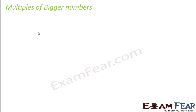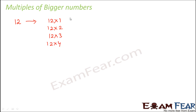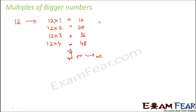You can also write multiples of bigger numbers. Let's consider 12: keep multiplying by natural numbers — 12×1, 12×2, 12×3, 12×4 and so on, giving 12, 24, 36, 48 and so on. This can go till infinity, so there exist infinite multiples of any number.